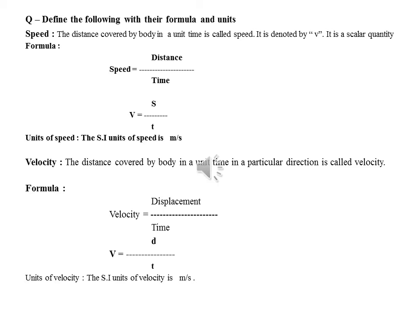First, we learn about speed. The distance covered by a body in a unit time is called speed. It is denoted by V. It is a scalar quantity. Speed is a derived quantity, and derived quantities are those physical quantities which are made by fundamental quantities.